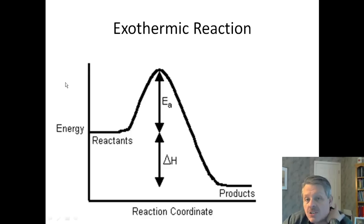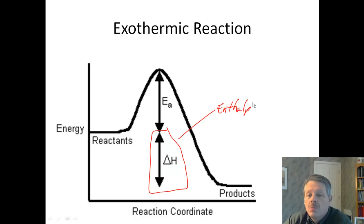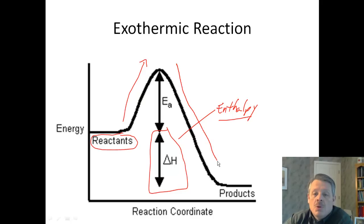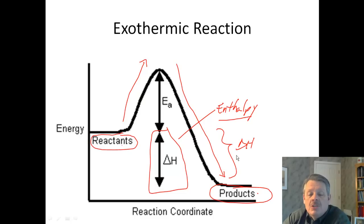We call this an exothermic reaction — write that down — and you probably want to draw this graph as well. You'll notice we have something called delta H, the change in heat energy or the change in enthalpy. Enthalpy — H-A-L-P-Y — is a word you need to know. That's the change in enthalpy of the reaction. Here we have a match, we strike it and give it energy to start, it forms carbon dioxide and water as products, and we have less energy in the products than we started with in the reactants. The delta H is the amount of heat energy given off by burning the match, methane gas, or whatever. That's all an exothermic reaction.